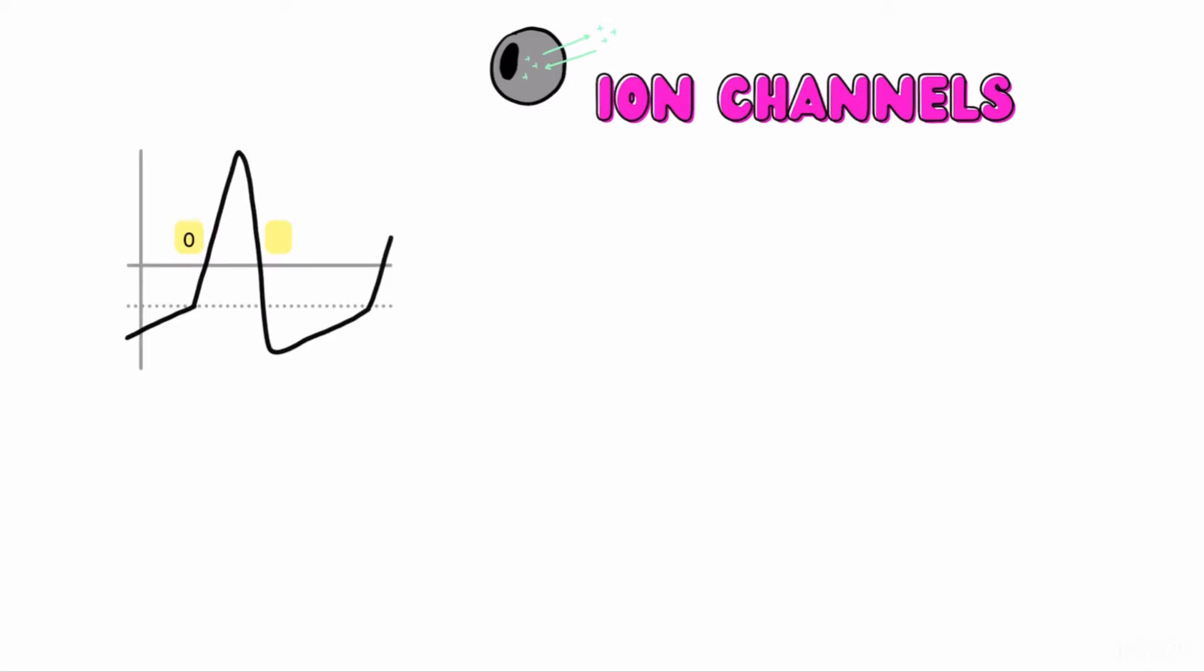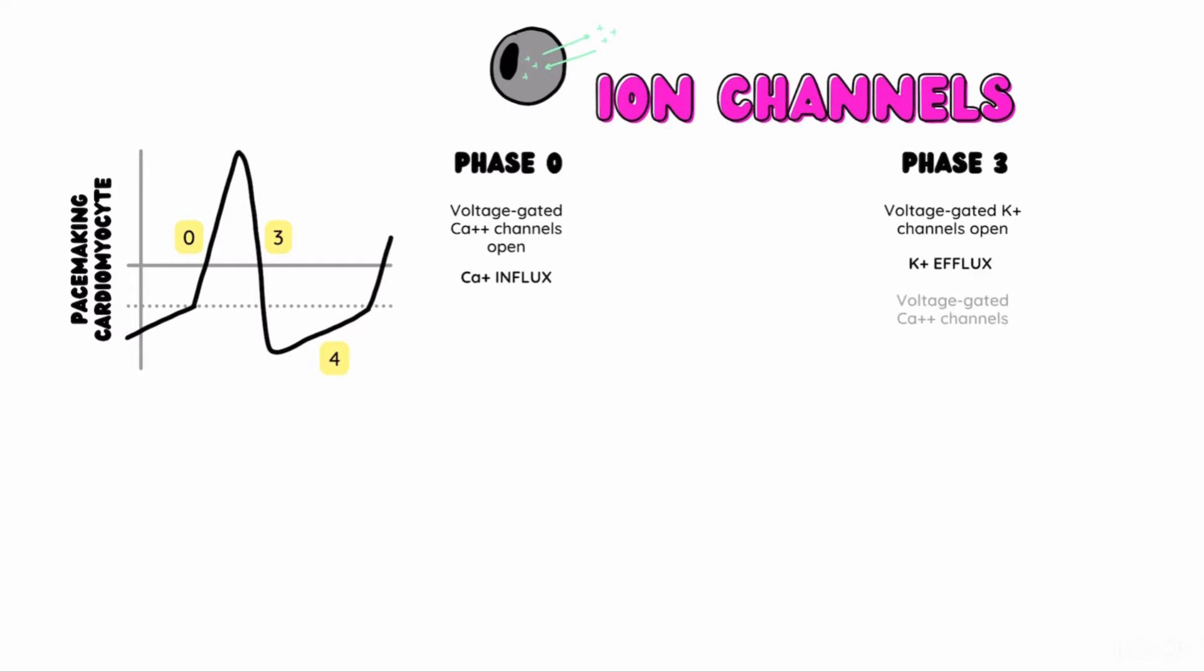In the pacemaking cells, phase 0 occurs when voltage-gated calcium channels open and allow an influx of calcium into the cell. At the peak of the action potential, calcium channels close and potassium channels open. This leads to phase 3, when potassium leaves the cell, which is known as potassium efflux, via voltage-gated potassium channels. This leads to hyperpolarization of the cell. Finally, the funny channels open during phase 4 to allow for the slow depolarization of the pacemaker cells towards the threshold potential.